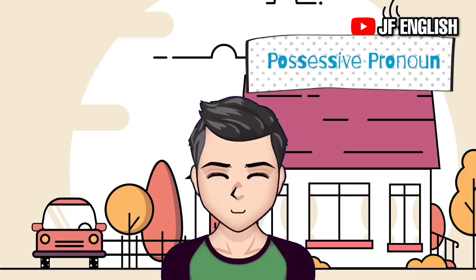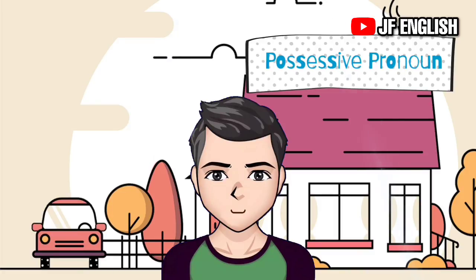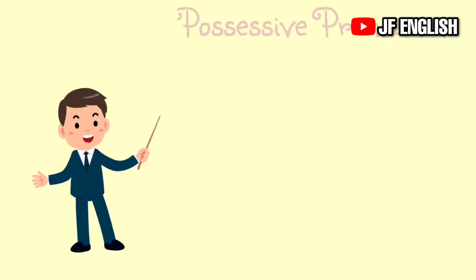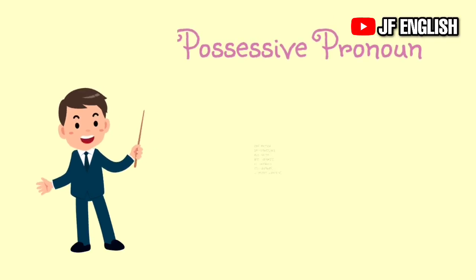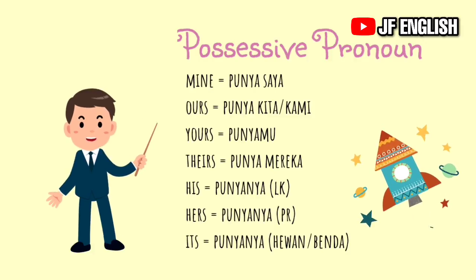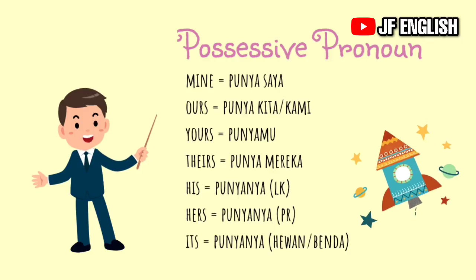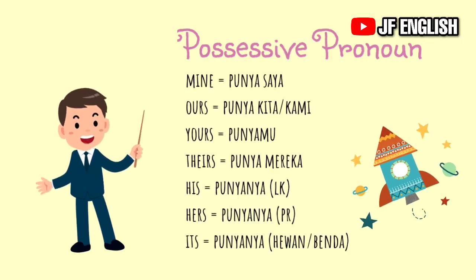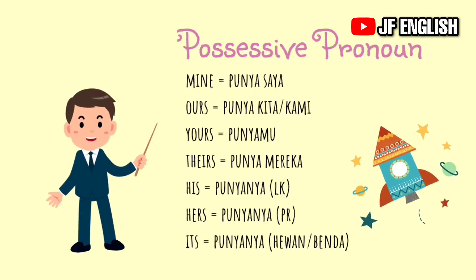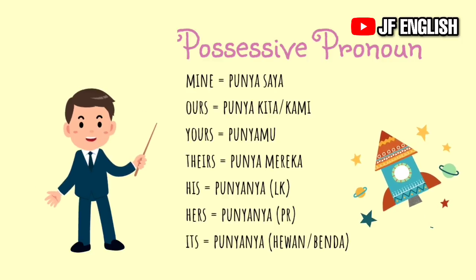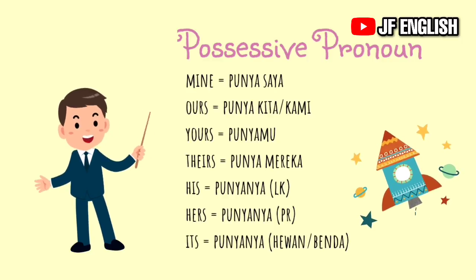Jenis pronoun berikutnya adalah possessive pronoun. Kata ganti kepunyaan atau possessive pronoun dipakai untuk mengganti kata benda sebagai subjek atau objek dari sebuah klausa atau kalimat, karena kata benda yang diganti tidak muncul di dalam kalimat. Possessive pronouns are: mine (punya saya), ours (punya kita/kami), yours (punya kamu), theirs (punya mereka), his (punya laki-laki), hers (punya perempuan).